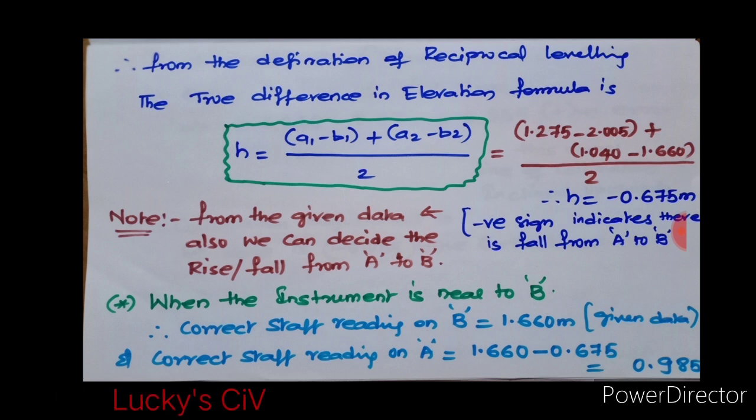Here the negative sign indicates there is a fall from A to B. Without knowing this, you can also decide whether from A to B it is fall or rise by knowing the staff readings, because the higher the staff reading values will indicate lower the level.